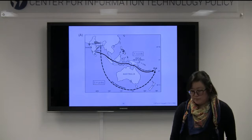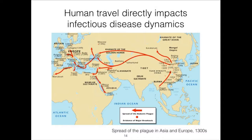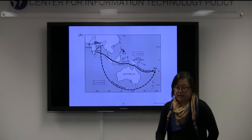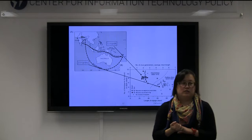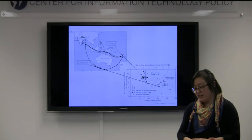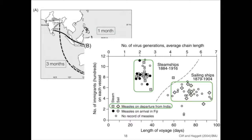This is a paper written in 2004 that looks at travel between India and Fiji. Before there were steam engines, it took about three months to get between India and Fiji. Once they had a new type of ship, they were able to get there in one month. They were actually able to relate this to disease outbreaks of measles. Measles is a predominantly childhood infectious disease — vaccine preventable, but very infectious. Pretty much if you're around someone who has measles and haven't been vaccinated, you're going to get measles.